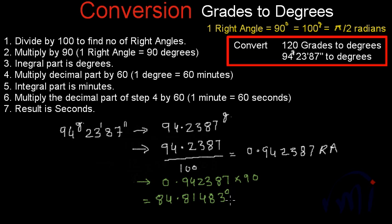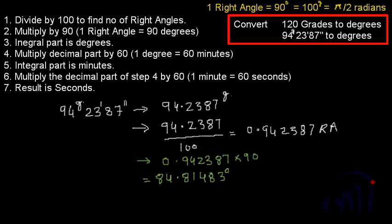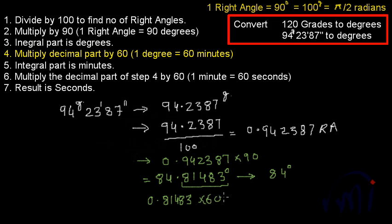So 0.942387 multiplied by 90 equals 84.81483 degrees. This is the degrees in decimal form. You can leave it as is, but if you want to convert it into minutes and seconds, we follow further steps. From here we get 84 degrees, and the decimal part 0.81483 must be converted into minutes by multiplying by 60, because each degree is equal to 60 minutes.